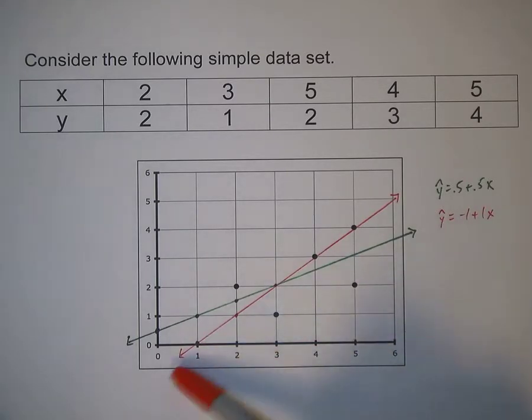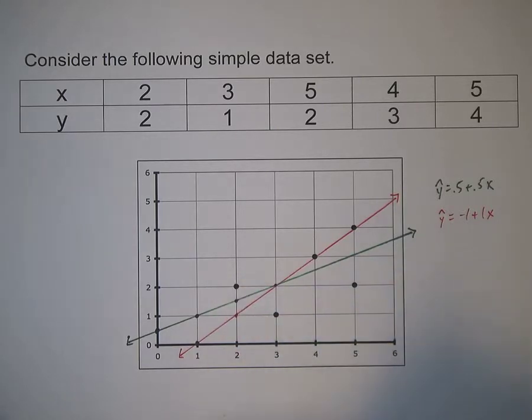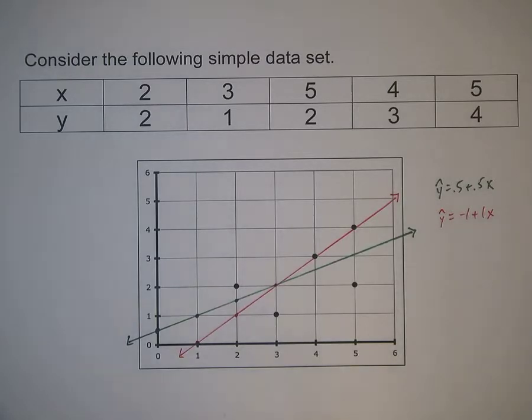A good thing about the red line is it goes through two points exactly. It has two points below and one point above. One downfall is this point is pretty far from the line. They're both pretty good, but we want to come up with criteria for determining which line is better.